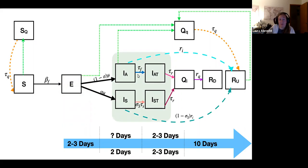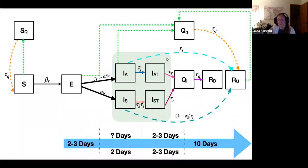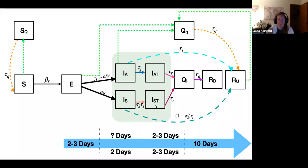Once infected, the infected asymptomatics who are in the testing surveillance program get tested at some rate and go into IAT. At the rate that their test results come back, they transition into QI, or isolation. Infected asymptomatic individuals that don't get tested will just transition into recovered undetected at the end of their infectious period — after 10 to 14 days, they recover but we won't know. For symptomatic individuals, we assume most will get tested within two days of developing symptoms and then transition into QI once their test results come back; the few that don't will go into recovered undetected.